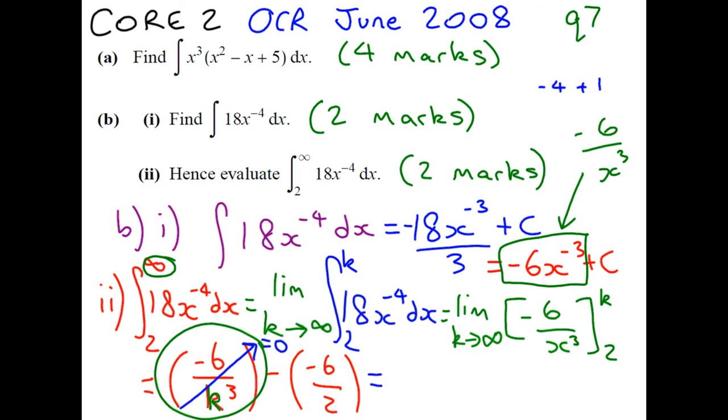Well, 6 over 2 is 3. And a minus and a minus makes a plus. So your answer for that question is 3.